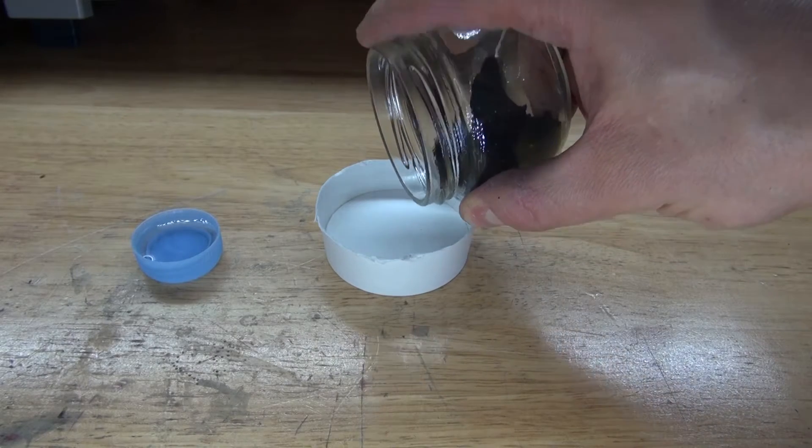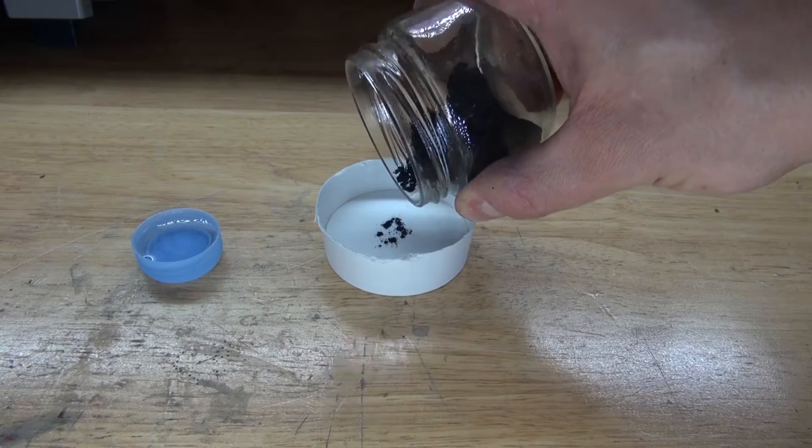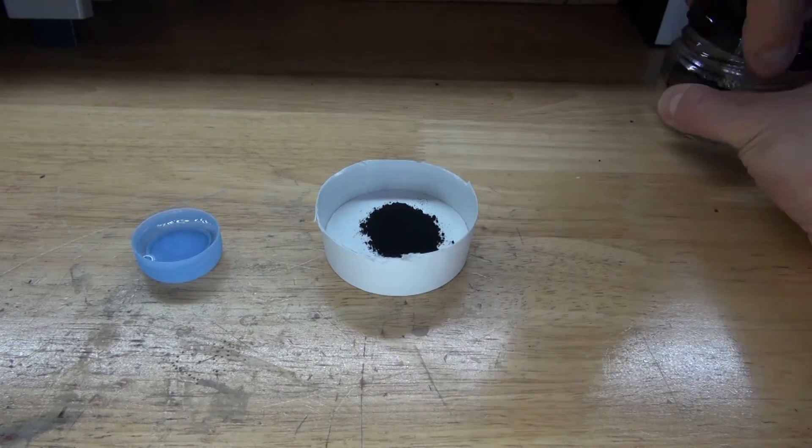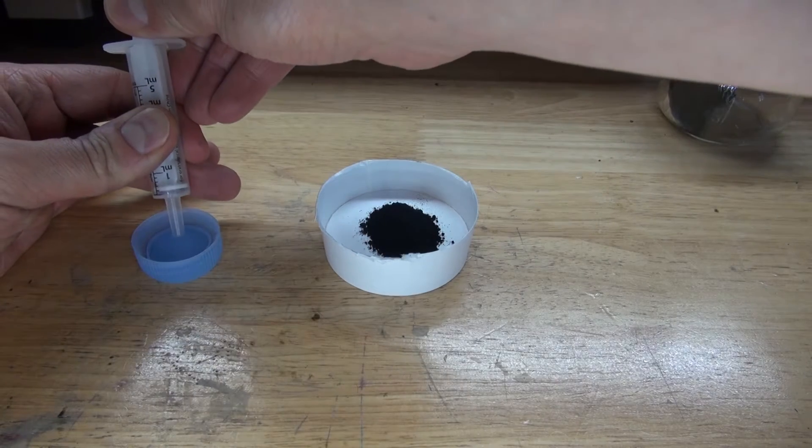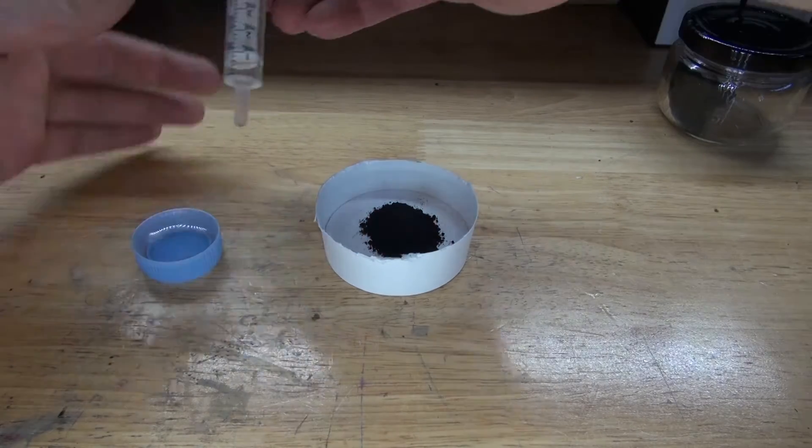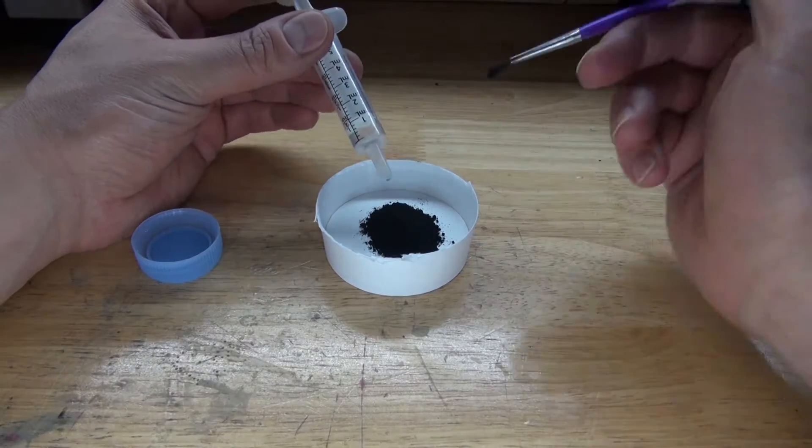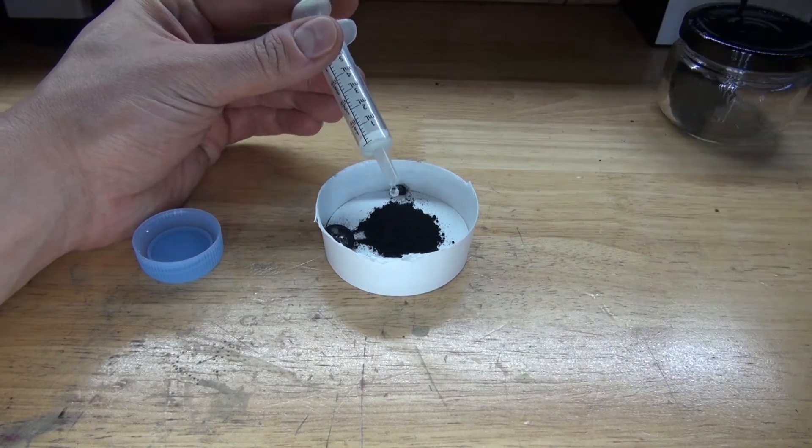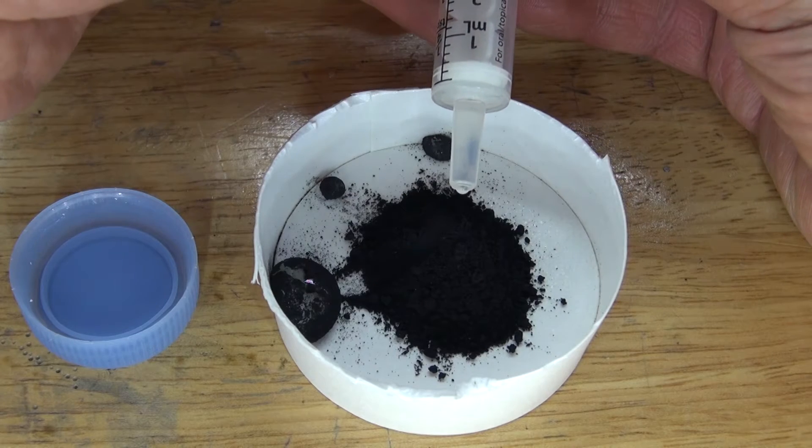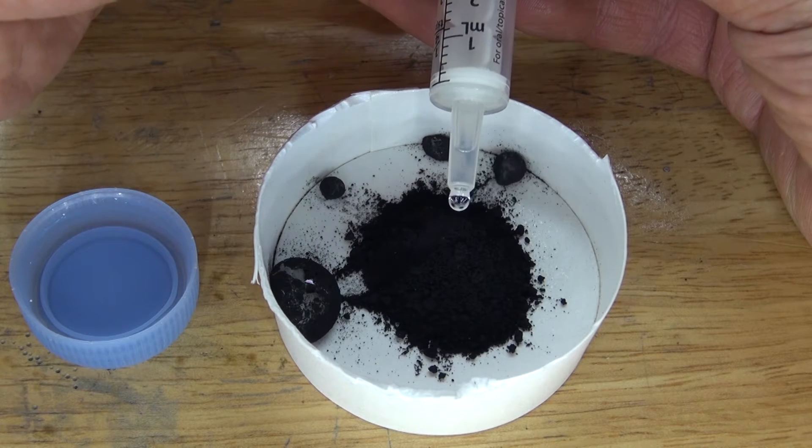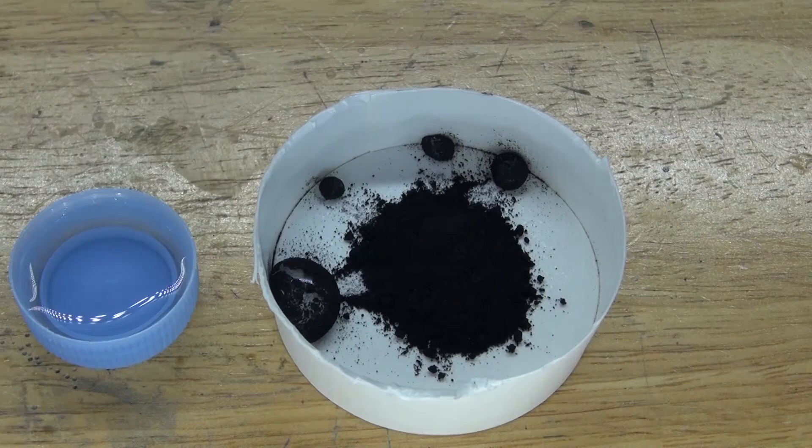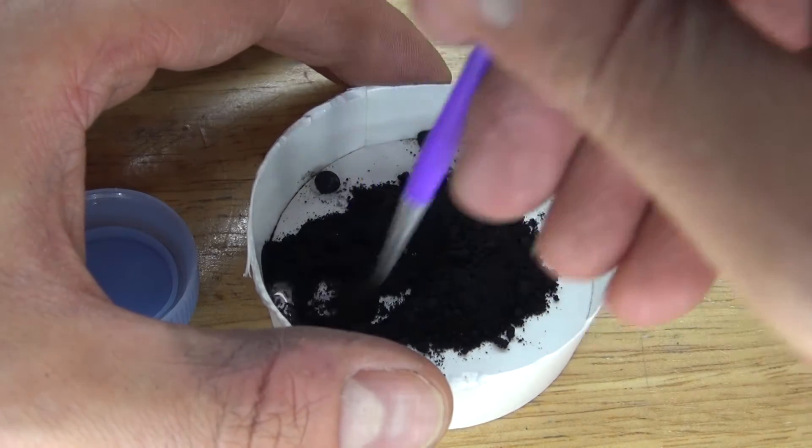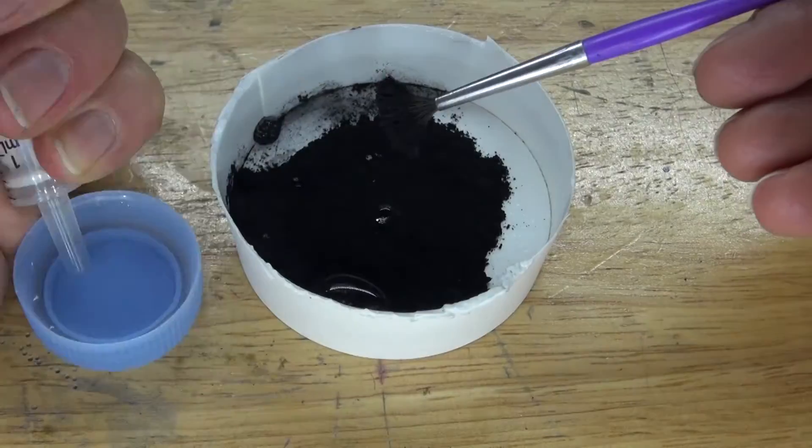First experiment is going to be the graphite and distilled water. Now add a small amount of distilled water. Put a few drops in to see if I can turn this into a paste. How interesting, the water actually beads up. Add some more water. That's very interesting. Apparently the surface tension on water is very high.